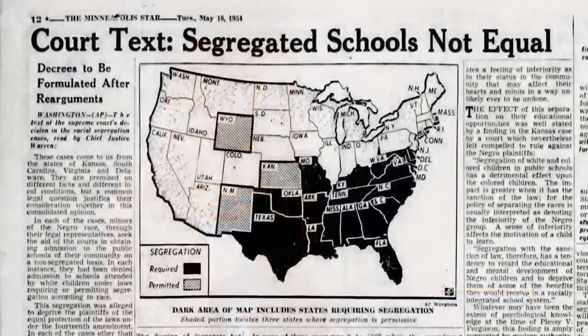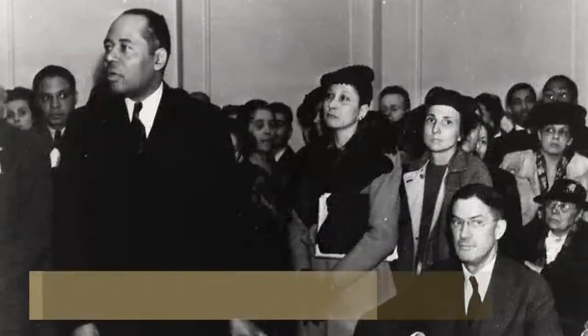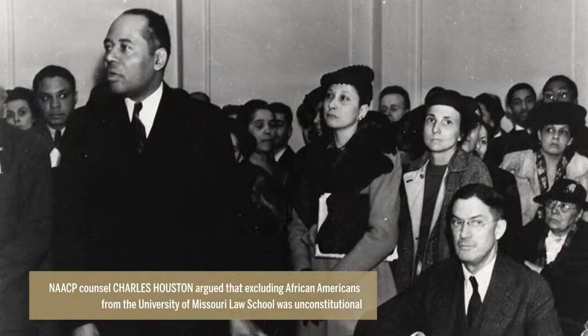You have two major court cases during this era. One in 1938, which overturned segregation at the University of Missouri Law School, which is the key stepping stone to Brown. There's a straight line from that to the Brown decision in 1954.